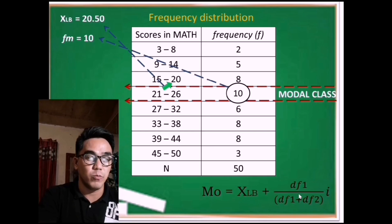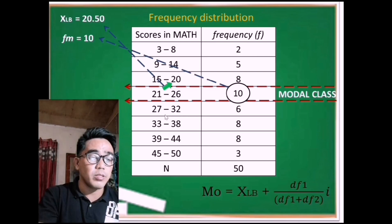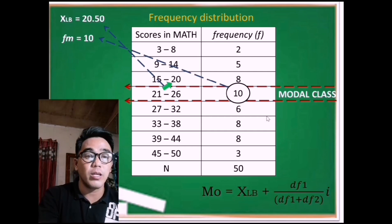Now, we can determine the df sub 1. Another problem is we don't know which frequency is above or below the modal class frequency. We're going back to the class limit. 15 to 20 and 27 to 32, which class limit is above 21 to 26? Is it 27 to 32 or 15 to 20? Of course, 27 to 32, because 27 is higher than 26. Therefore, this row will be the above.